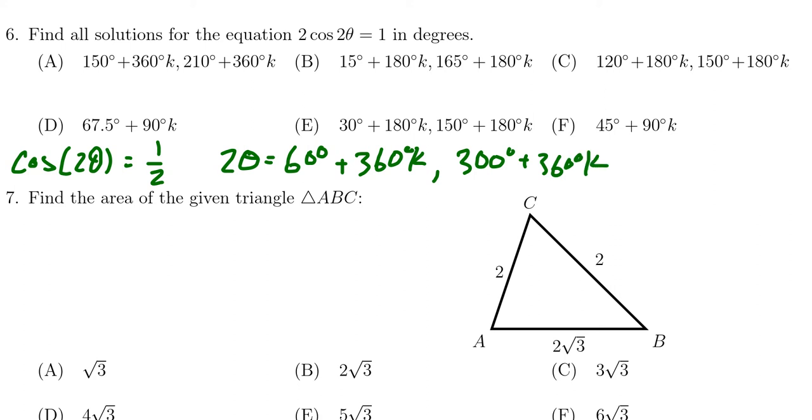Then we have to divide the answers by 2 to get theta. So 60 divided by 2 is 30 degrees. But that also changes the period to be 180 degrees k. And then we also have to divide 300 by 2. So we get 150 degrees plus dividing the period also by 2. We get 180k as well.